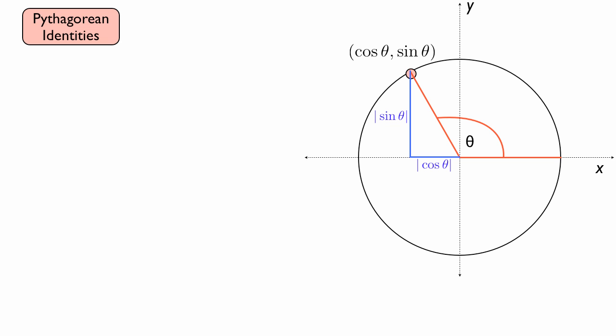And the length of the hypotenuse of this right triangle is going to be 1 because this is the unit circle. Every radius of the unit circle is always going to be 1. In fact, that's why it's called the unit circle.